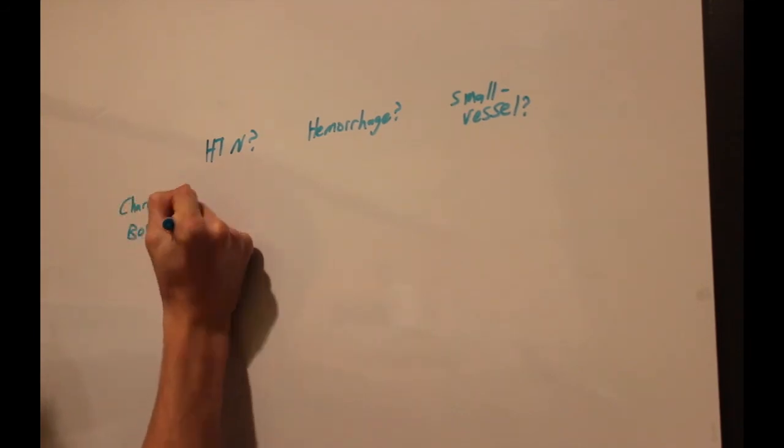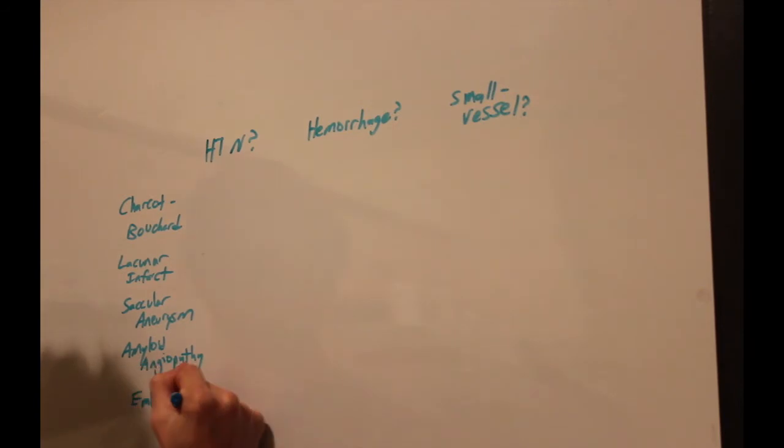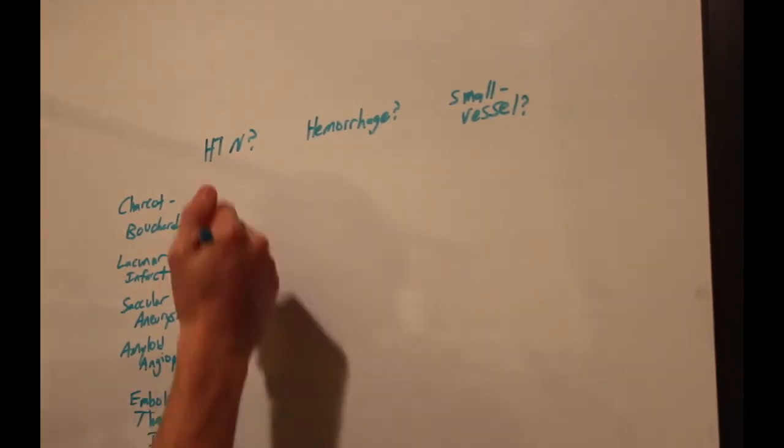So moving on, we have our five etiologies. The first would be Charcot-Bouchard microaneurysms, a lacunar infarct, a secular aneurysm, amyloid angiopathy, and then finally we have an embolic or thrombotic infarction.